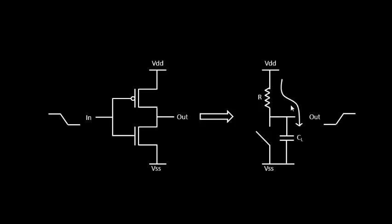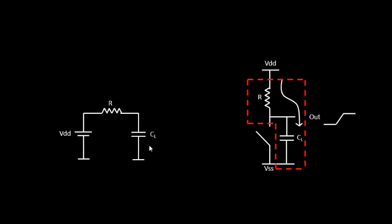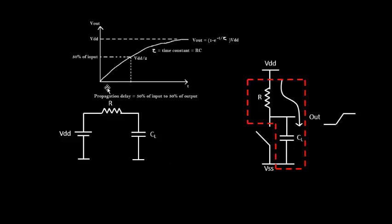We need to relate this drain current with the delay of the cell. Looking at the RC network, the voltage at the output of the capacitance resembles the rising logic transition from logic zero to logic one.